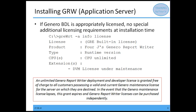If you have a valid BDL license, you don't need any additional licensing for GRW. When you do the licensing check, it will say it's a GRE built-in license because the DVM license is under maintenance. If your maintenance becomes invalid, this grant will expire and you'll need to purchase a license independently. But as long as your BDL license is under maintenance, you're good to go and don't need to worry about additional licensing for GRW.